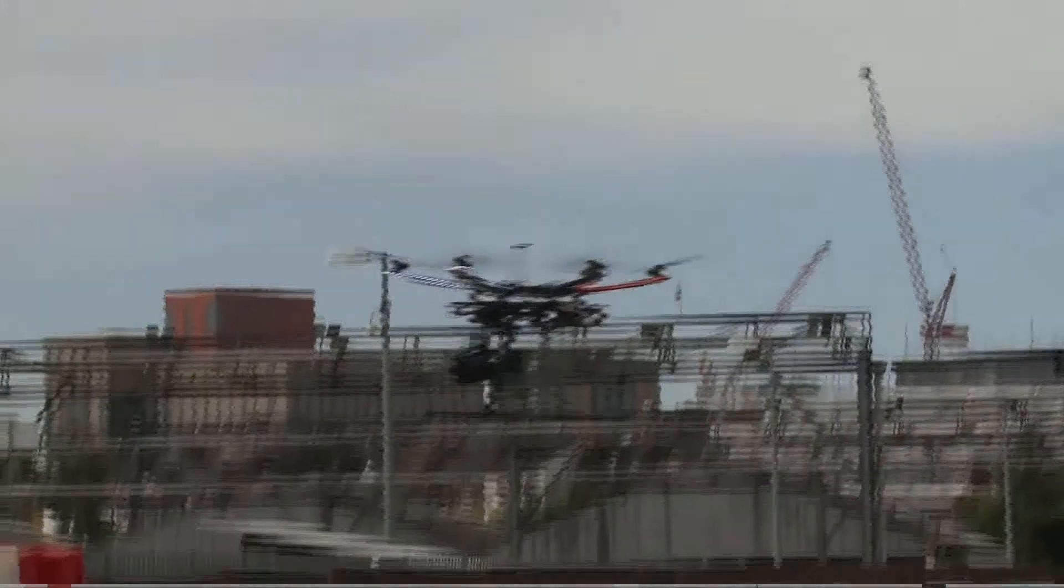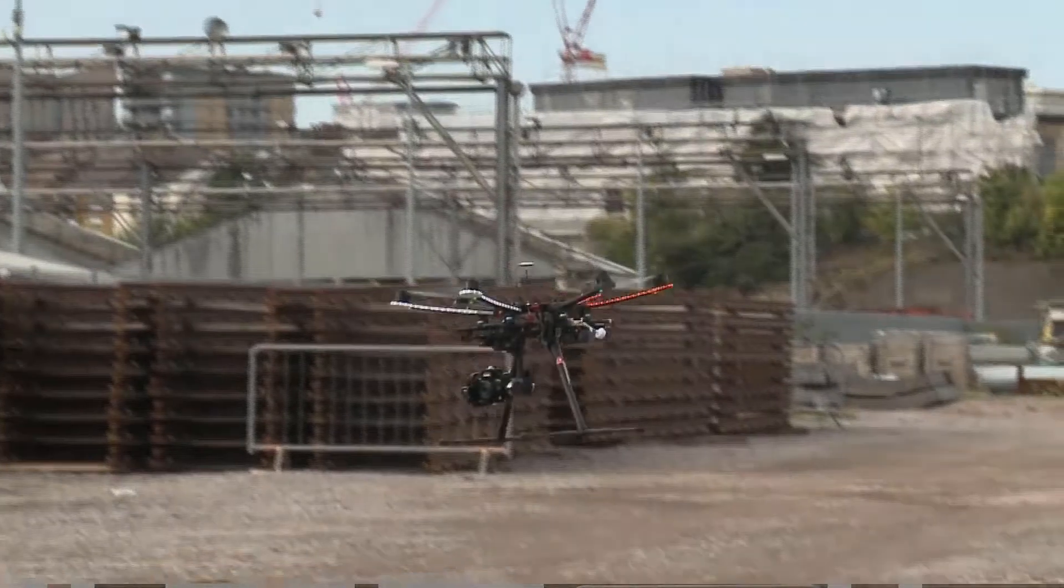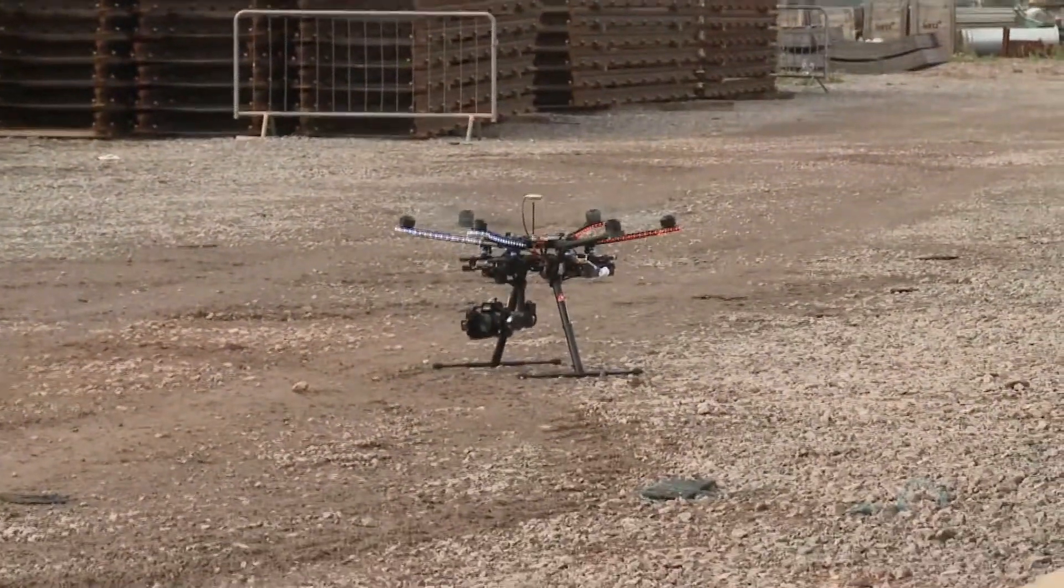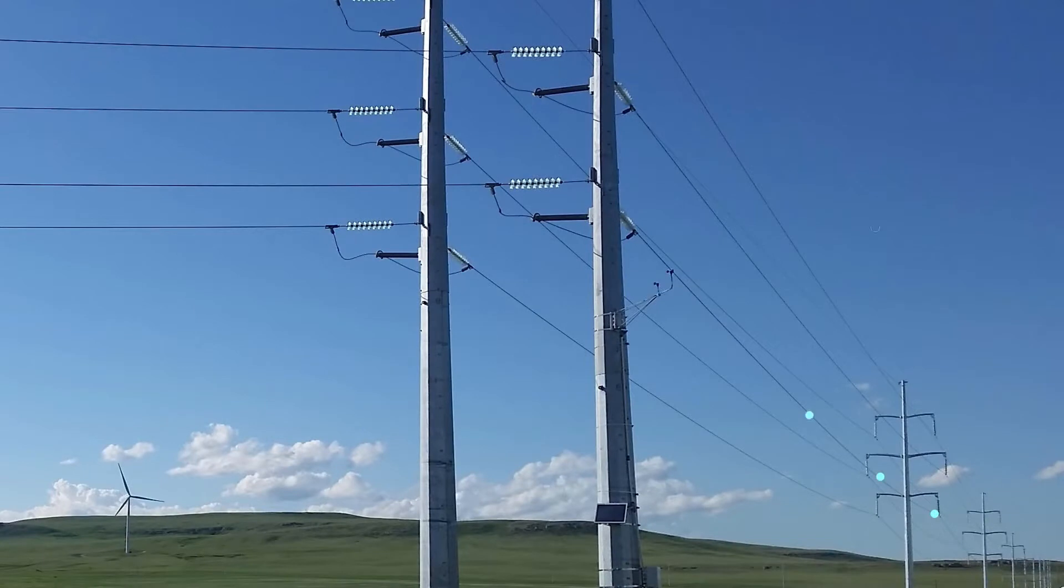Before we can describe by how much we have improved the drone's energy collecting capability, we have to understand how it collects this power. The typical power line in the US has 700 amps of electricity flowing through it. When current moves through a wire or power line, it creates an electromagnetic field, or EMF for short.